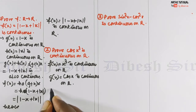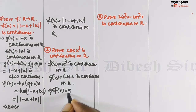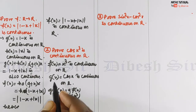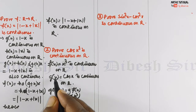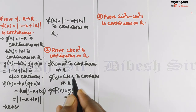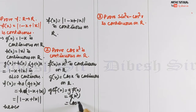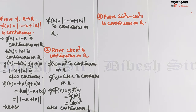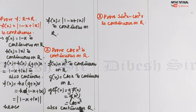Clearly g(f(x)) means we substitute f(x) = x³ into g. Since g(x) = cos x, g(y) = cos y, g(z) = cos z, so g(x³) = cos(x³). Therefore cos(x³) is also continuous on R, because if one function is continuous and the second function is also continuous, then their composite function is also continuous.